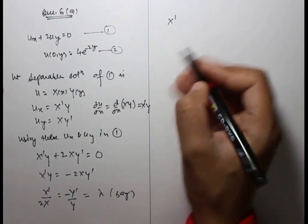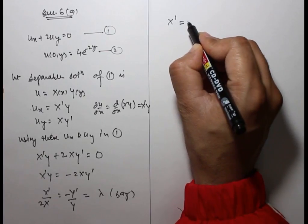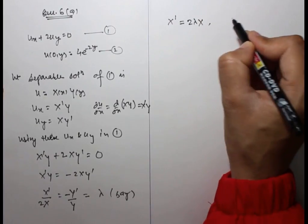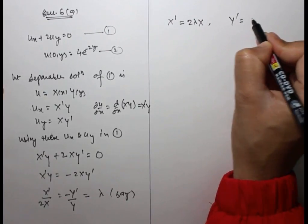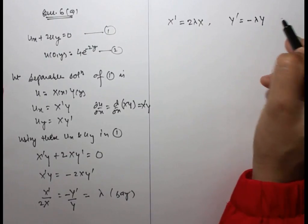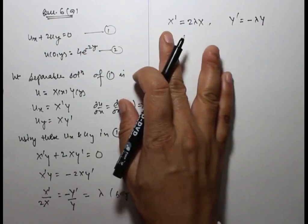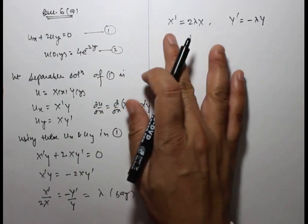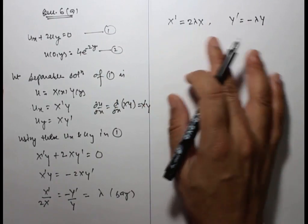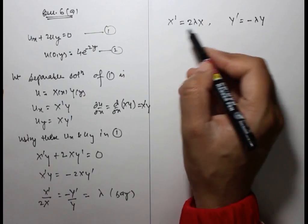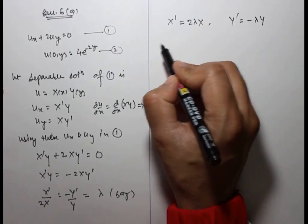We can write X'/X equals 2λ and Y'/Y equals minus λ. The partial differential equation has been converted into ordinary differential equations, which we will now solve by variable separable method.